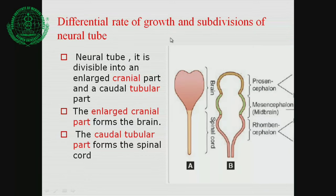The neural tube has a cranial part and a caudal part. The cranial part gives rise to the brain, while the caudal tubular part forms the spinal cord. The brain develops from two primary parts: the prosencephalon and the mesencephalon, while the rhombencephalon includes the lower part. The rhombencephalon is further divided into the metencephalon and the myelencephalon.